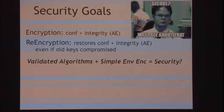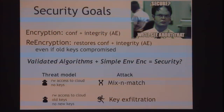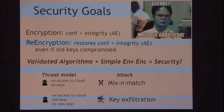I want to walk through two threat models. In the first, very basic threat model, we give the attacker read-write access to the cloud but not even any keys, and I'll show an attack I call a mix-and-match attack. Then we'll upgrade the threat model, give the attacker some old keys — which is what we expect re-encryption to protect against — and I'll show another attack called a key exfiltration attack. Let's start with that first threat model.